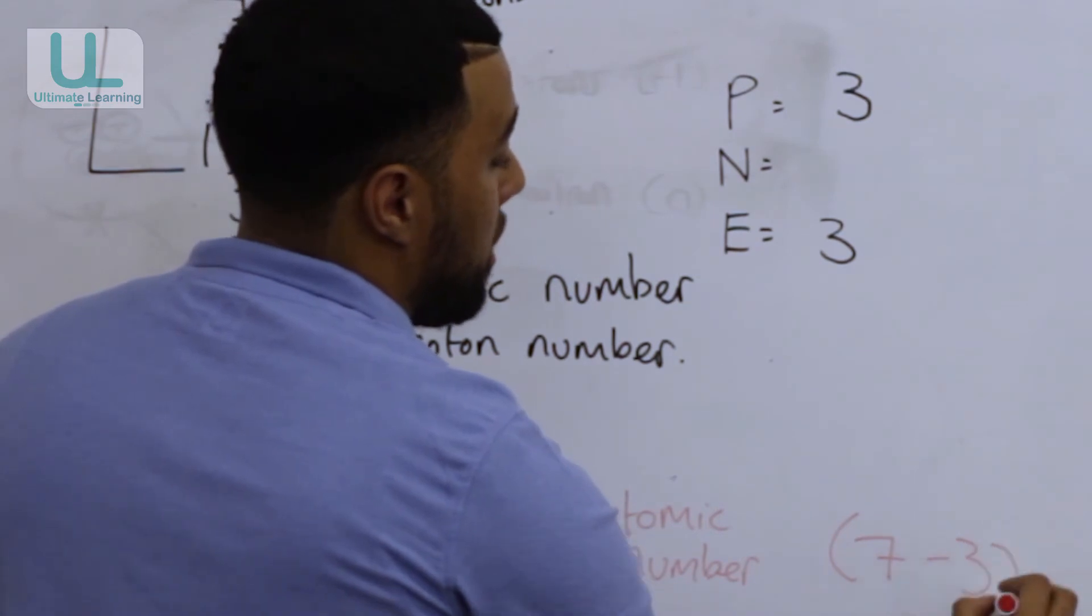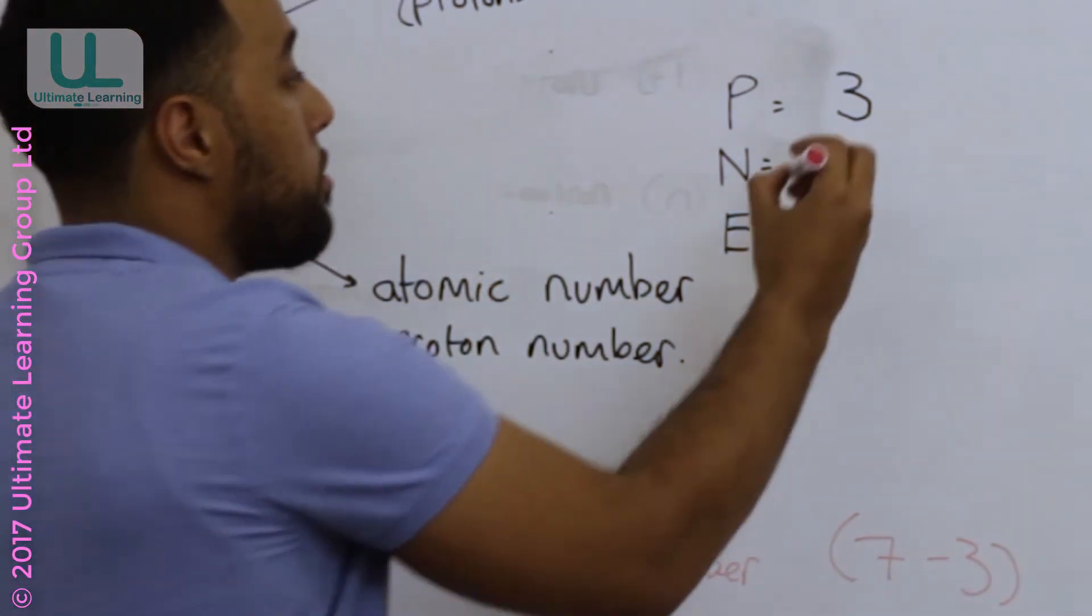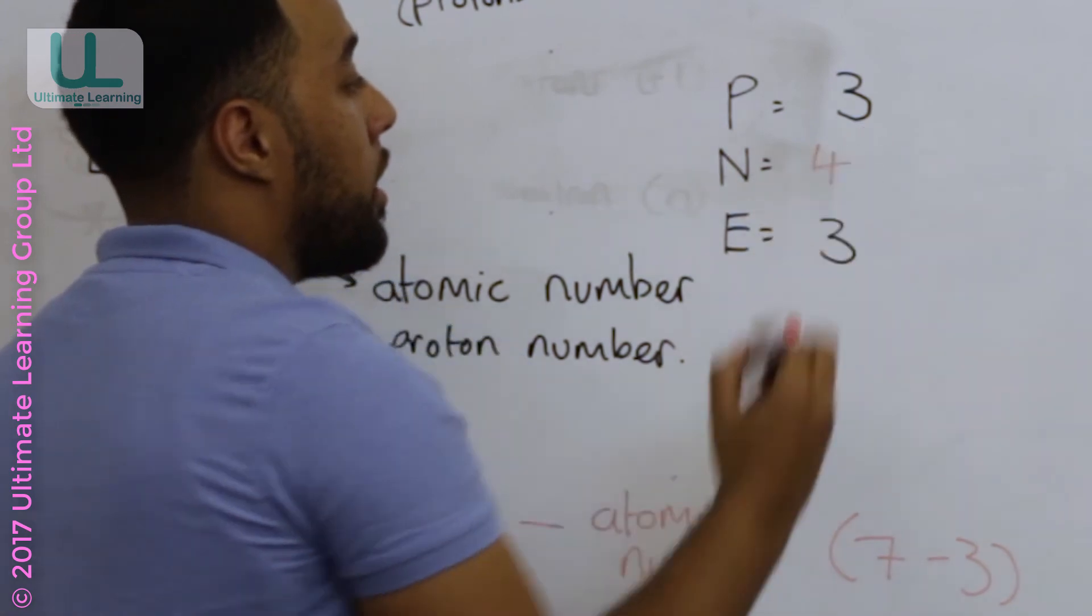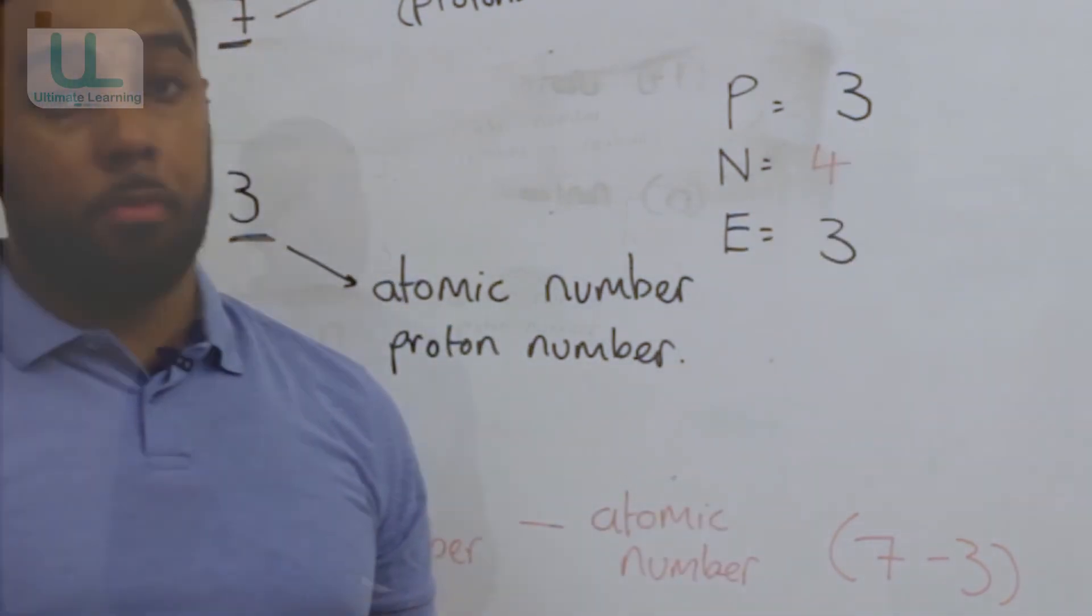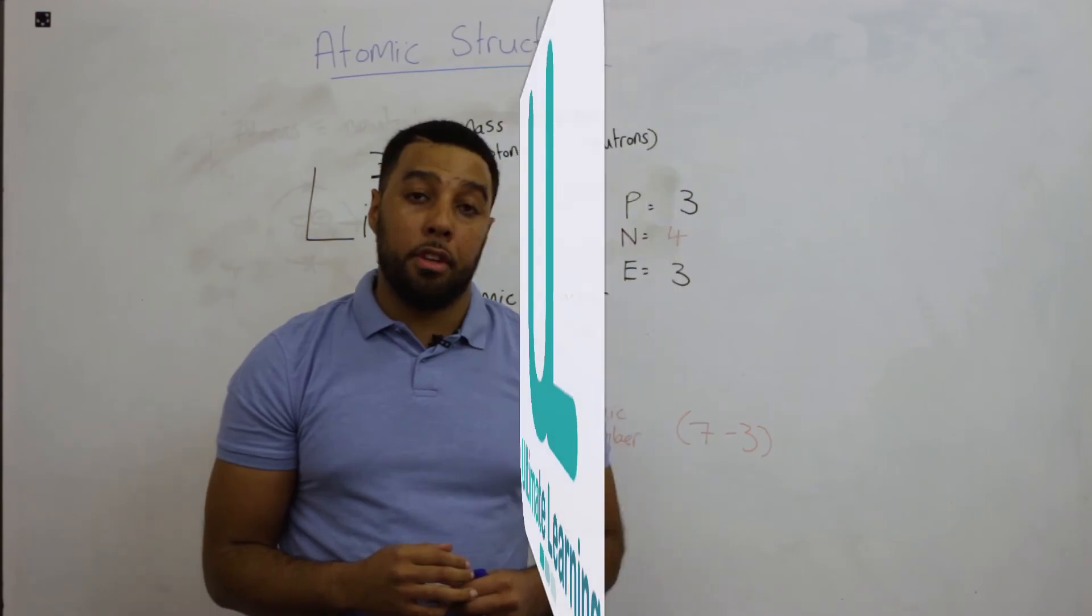So the number of neutrons for lithium is simply seven take away three, which gives us a neutron number of four. Okay, that's time to tune in. Stay tuned for another video.